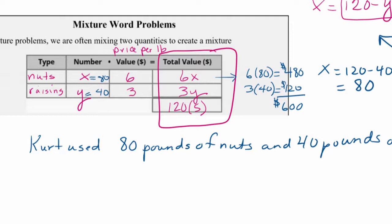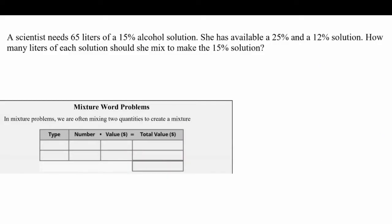Here's another mixture problem. A scientist needs 65 liters of a 15% alcohol solution. She has available a 25% and a 12% solution. She's going to combine the stronger 25% solution with the 12% solution to dilute it down to 15% alcohol.